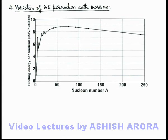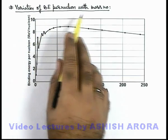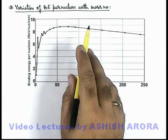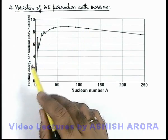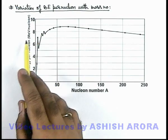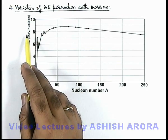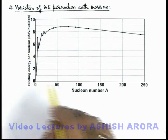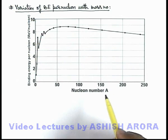Let's now discuss some facts about variation of binding energy per nucleon with mass number. This is the graph which shows the binding energy per nucleon in million electron volts per nucleon with the mass number of various elements in the periodic table.